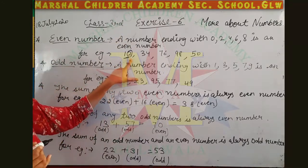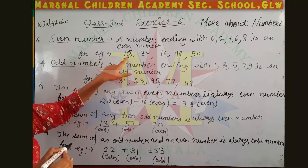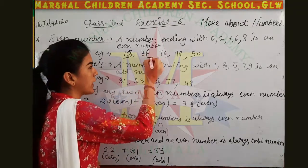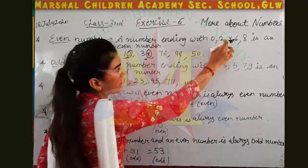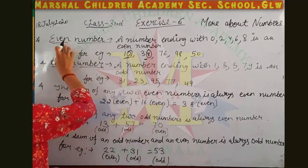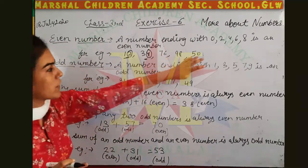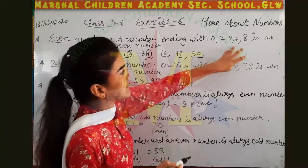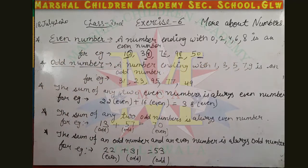12's ending number is two, which means 12 is an even number. 34 — the ending number is four, so it is an even number. Similarly, 76, 98, 50 — their ending numbers are six, eight, and zero. So all these numbers are even numbers.